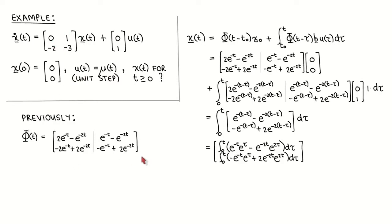We now use the state transition matrix to write the solution of the non-homogeneous state equation. The first term is the state transition matrix times the initial state vector, which is a zero vector. The second term is the integral of the state transition matrix with argument t minus tau — so we replace each t with t minus tau — times the B vector times the input, which is 1 over the entire period of integration. The first term falls away, and after multiplying the state transition matrix with the B vector, we get this vector.